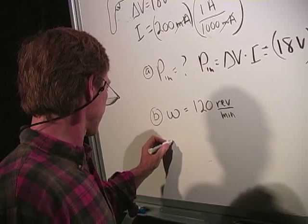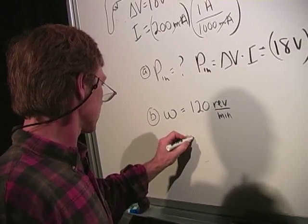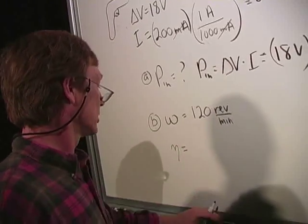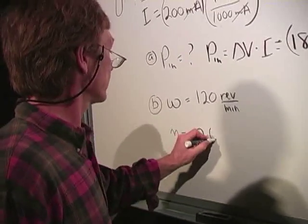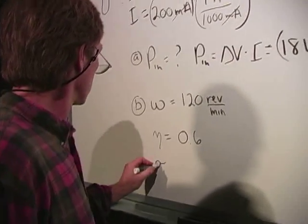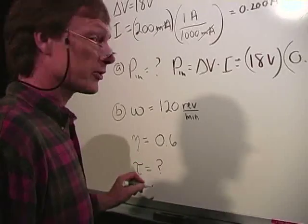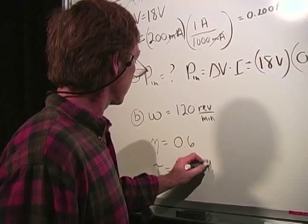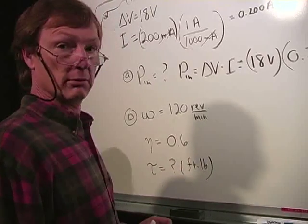Let's say the efficiency is 60% efficiency. I'll just use a fraction this time. Let's say the efficiency is 0.6. I want to know, what's the torque? And I want it in foot pounds. Well, that'll be tricky.